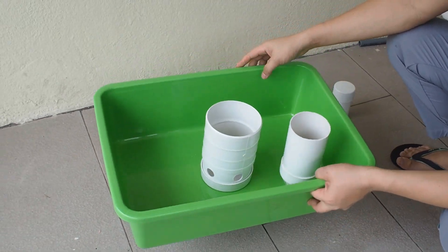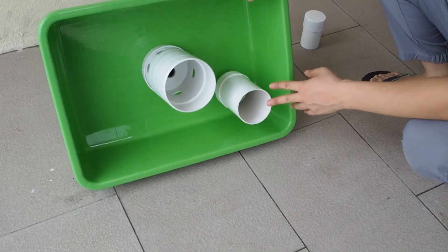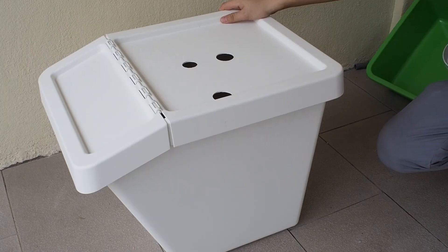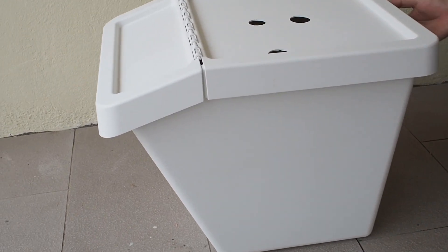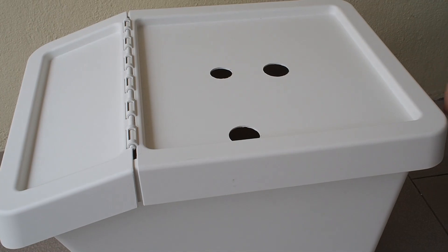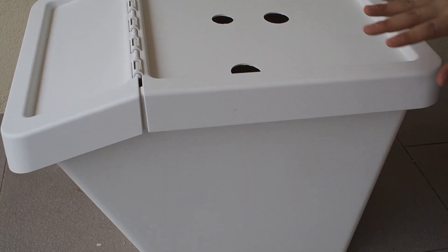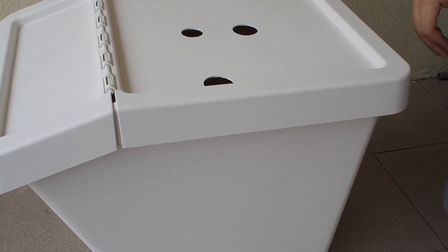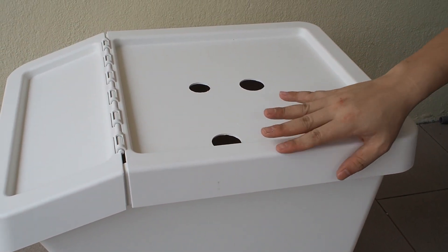This is the grow bed tray. It comes with the bell siphon and also the tower base. So this is the fish tank. This is where you can put the fish inside here. In the aquaponics system, you have to recycle the waste from fish to convert that to become nutrient for the plant uptake.